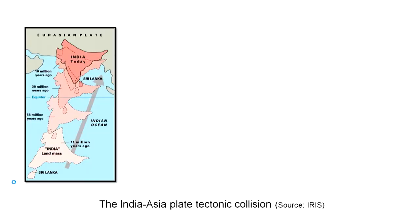The Indian subcontinent — or more precisely the Indian plate — has been moving since about 71 million years ago. It was somewhere else, as you can see in this map, and then slowly it has moved to the current position. This movement is still continuing, and as it meets with the Eurasian plate shown here in grey color, this pushing or migration of the Indian plate is creating stresses all along the Himalaya and some other parts of India.